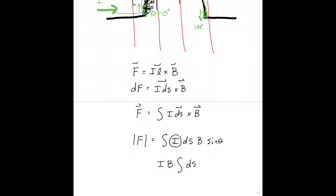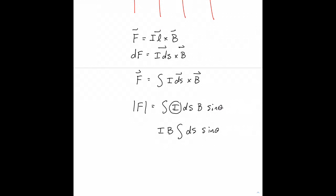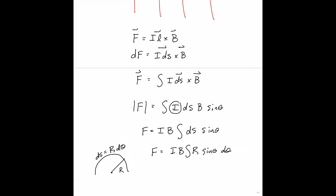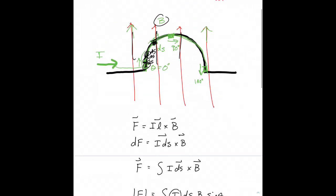Now I'm left with the integral of DS sine theta. Whenever we're working with circular paths, DS is equal to R dθ. So the force equals IB times the integral of R sine theta dθ. The very first segment has an angle of zero degrees between the direction of current flow and the direction of the magnetic field, and we work our way up to 90 degrees and then all the way to 180 degrees.